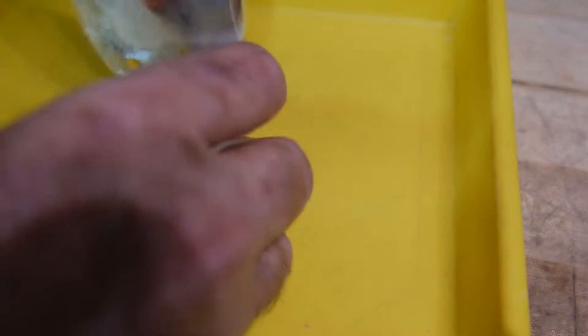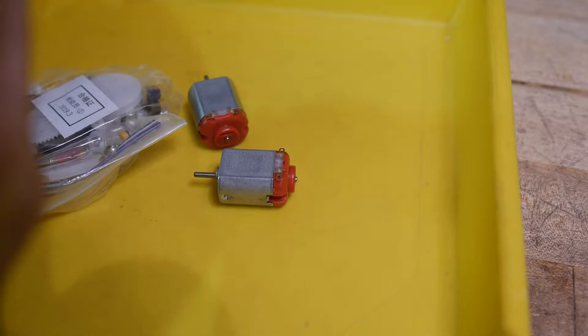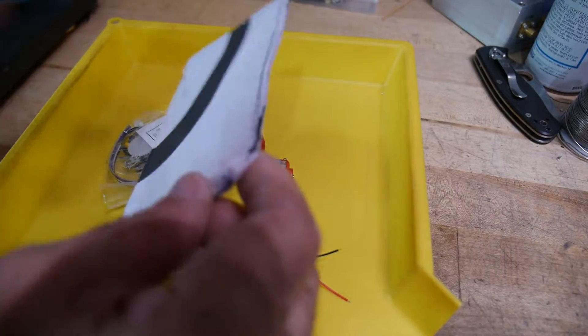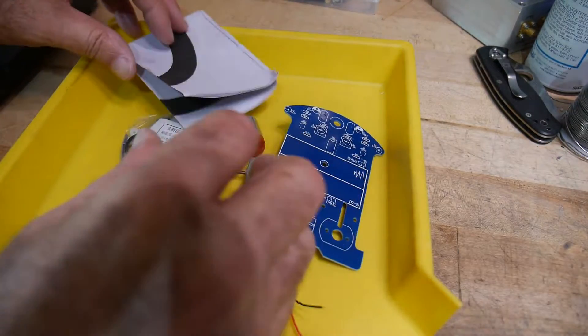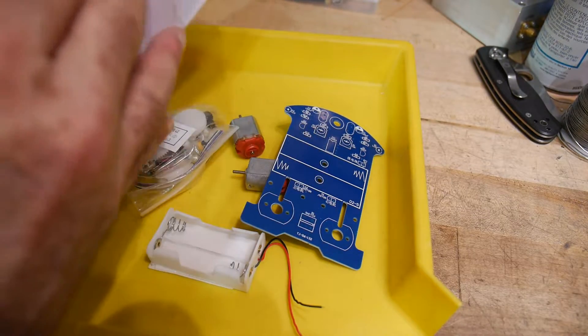Let's get out the tray here. Alright, so we have some interesting things. We have double sticky tape here. Let's pull it away. Here's a PC board. Looks maybe like instructions. Maybe more than instructions.